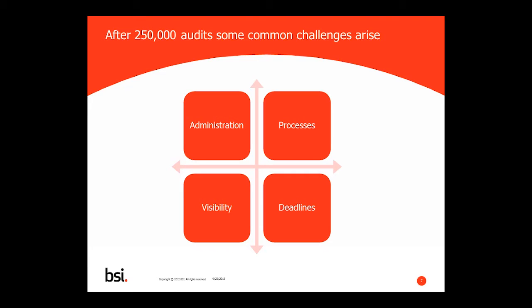Lack of visibility — and this can be across department, location, country, or globe. What actions are being taken? What actions have been closed out in a timely manner? Which individuals have not addressed their actions? Again, all of this is a common theme when using manual-based systems. And finally, deadlines are being missed, and this can have a significant impact on the organization depending upon which area of the business the action or task arose from.